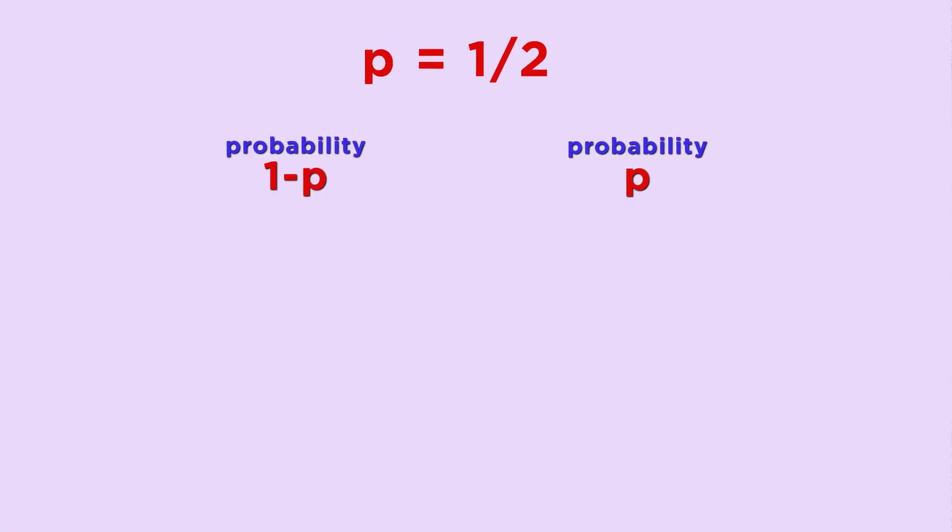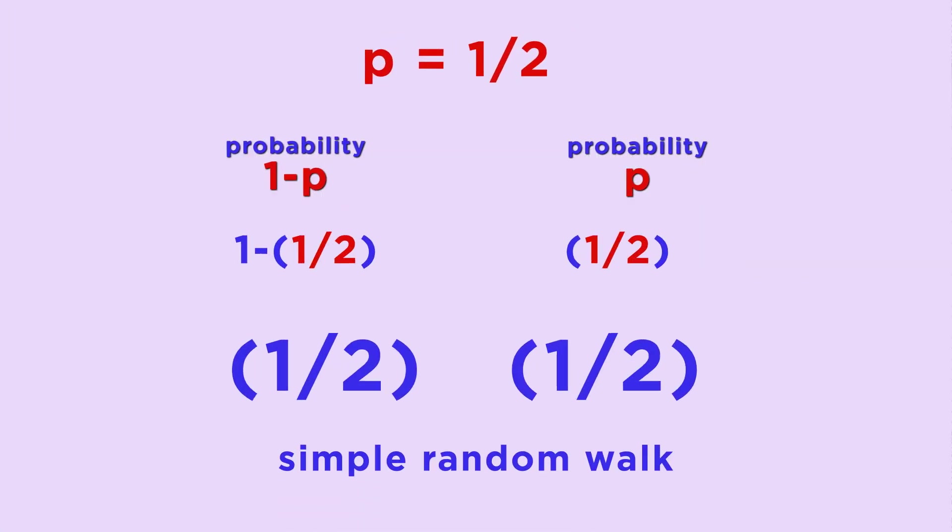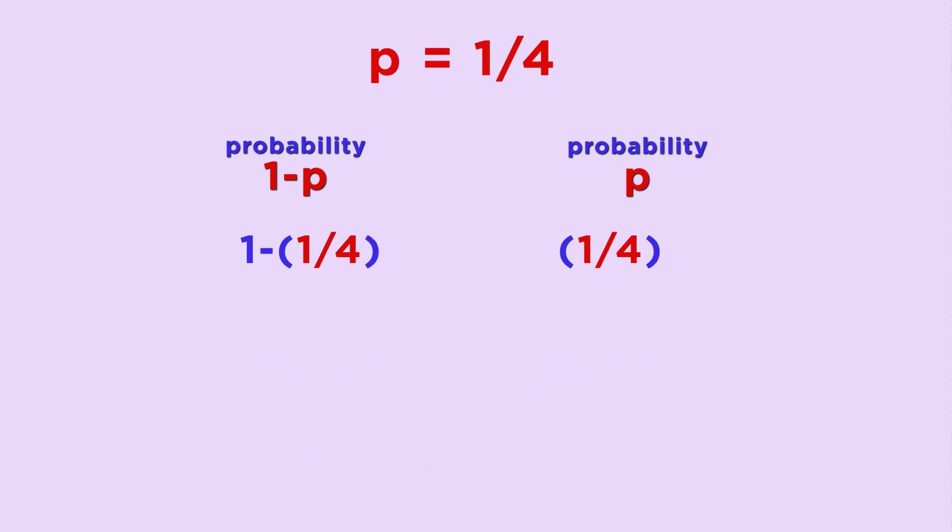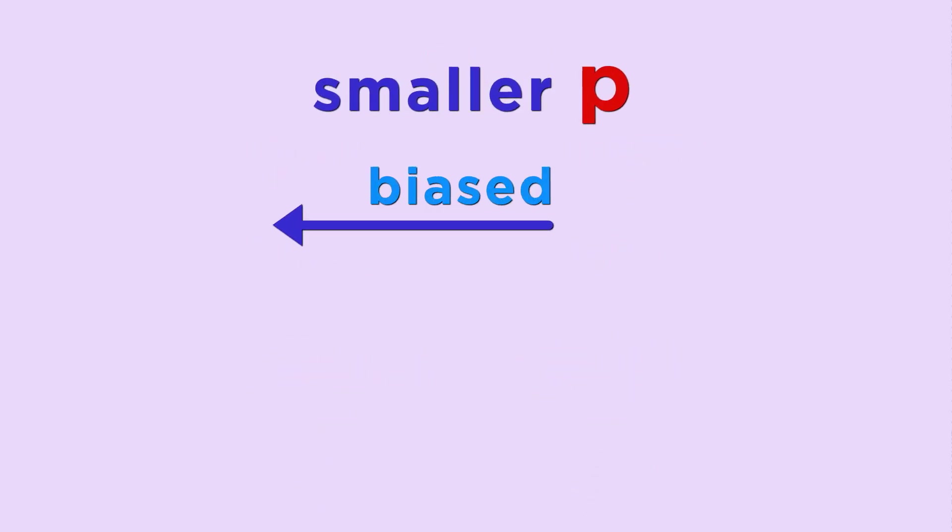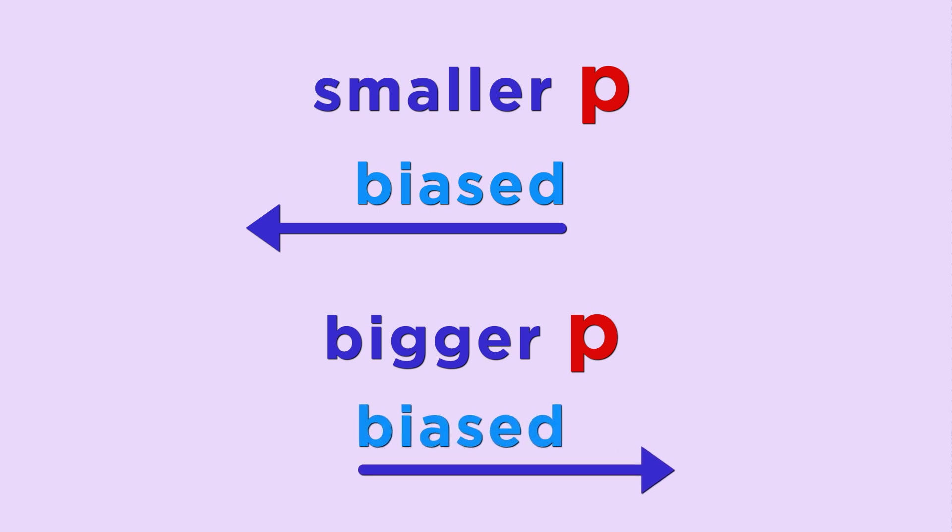So if p equals one-half, we have a simple random walk we were just looking at. But if p equals one-quarter, it has probability one-quarter of moving right and probability three-quarters of moving left, so it's three times more likely to move left than right. The smaller p is, the more it's biased to the left. The bigger p is, the more it's biased to the right. Before, we expected our random walk to hover near 0, but now it should be moving.